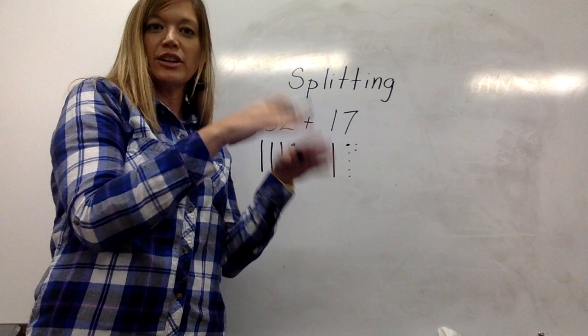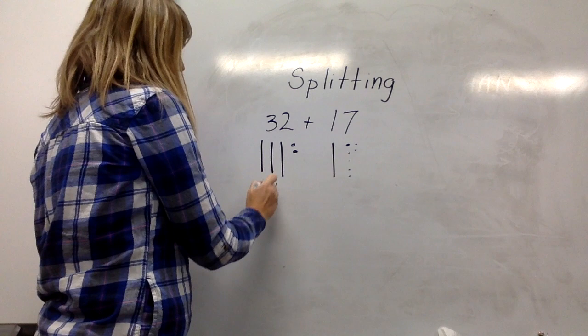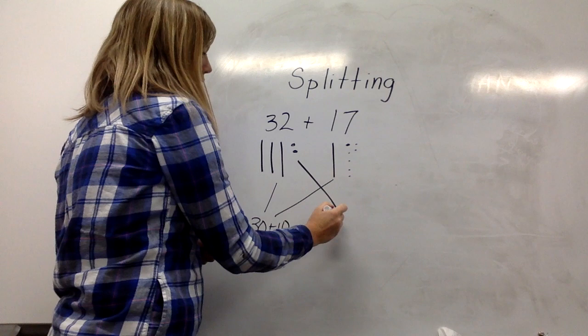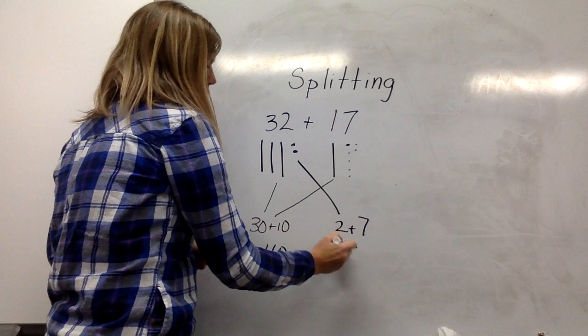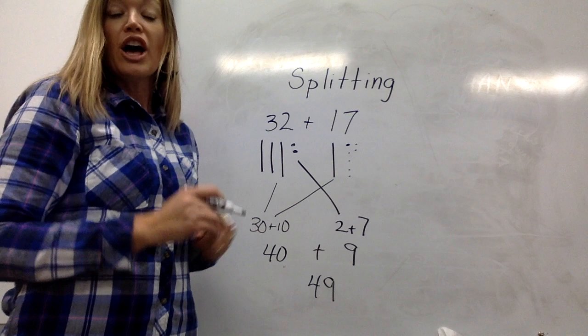In the splitting method, we split apart our tens and add them together, and our ones and add them together. In this case, I add my tens, 30 plus 10, and my ones, 2 plus 7. 30 and 10 is 40, 2 and 7 is 9, so 32 plus 17 is 49.